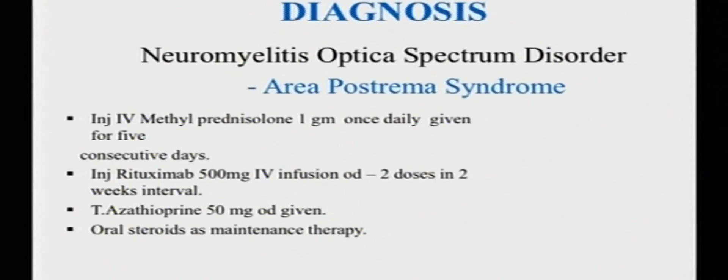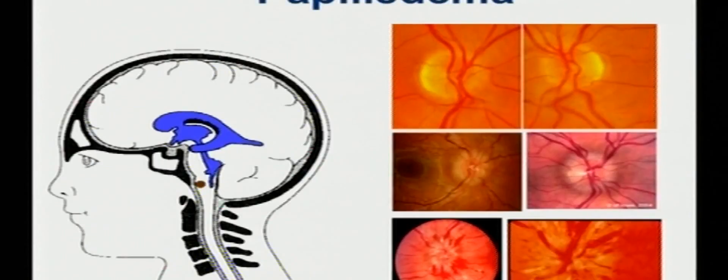The diagnosis is straightforward: Neuromyelitis optica spectrum disorder. In this, the area postrema syndrome is interesting because these patients present with hiccups and vomiting and they end up with a gastroenterologist and finally they come to us with loss of vision. This has to be kept in mind in all the optic neuritis patients. Another cause could be multiple sclerosis also.